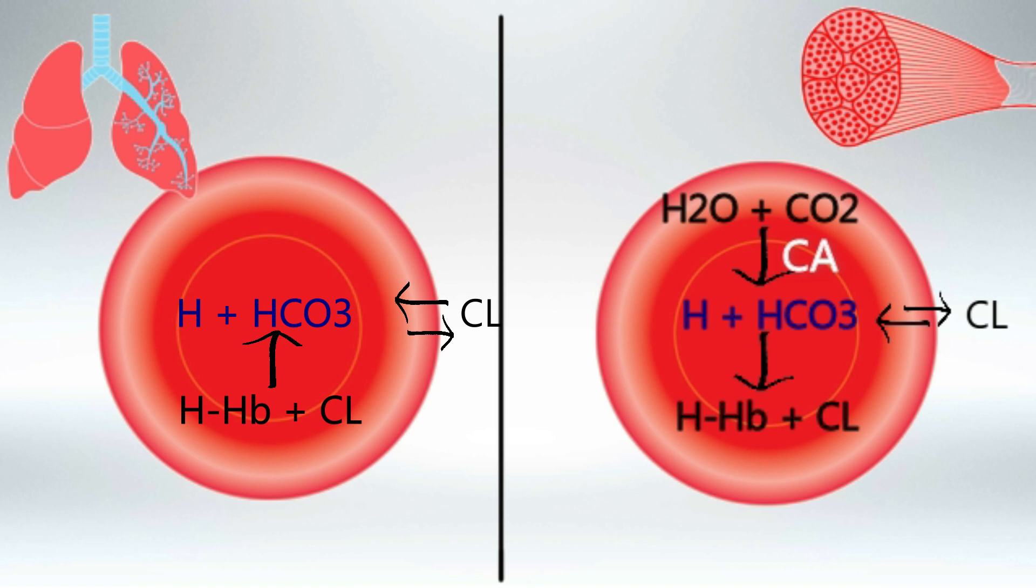Chloride will be again exchanged with bicarbonate from the blood. Using the same enzyme carbonic anhydrase, we'll recreate carbon dioxide and water. Carbon dioxide will leave the RBCs into the blood where it's going to be exhaled.